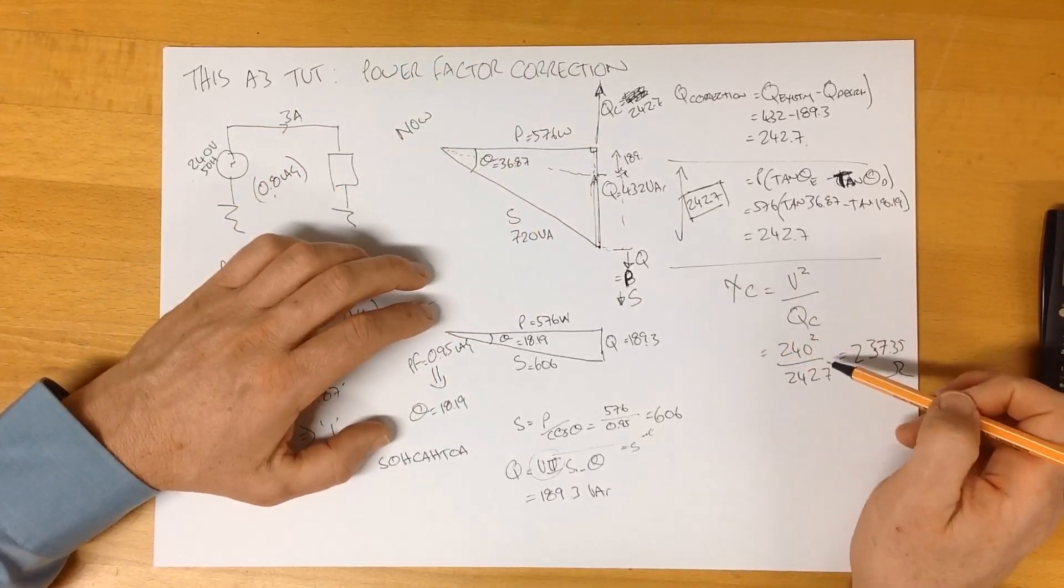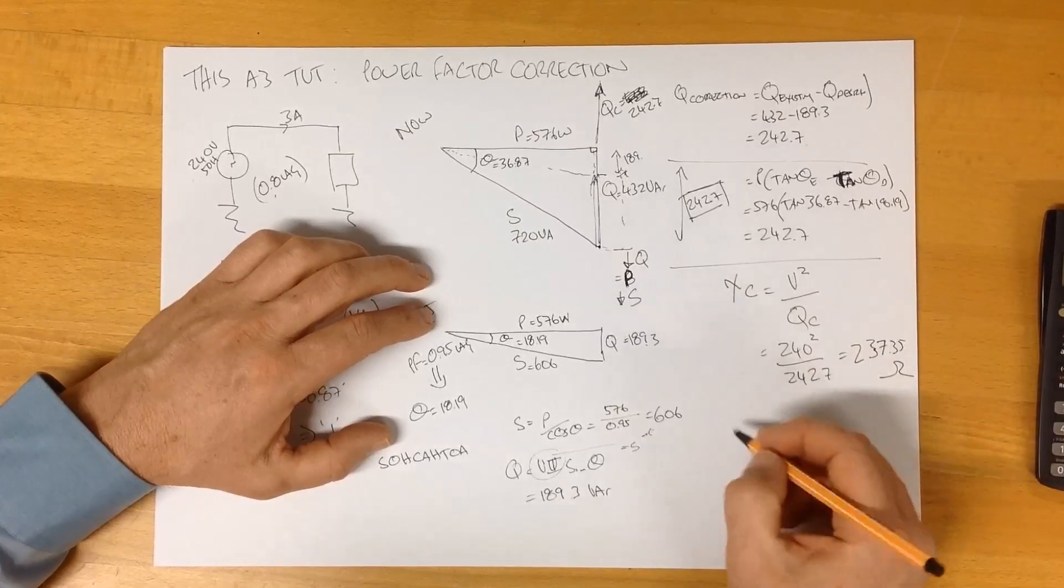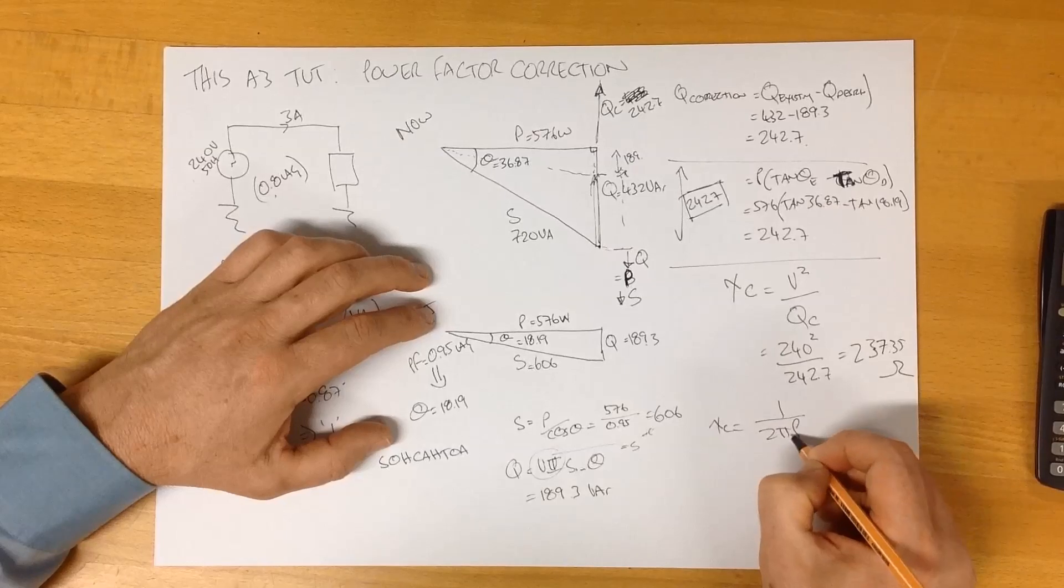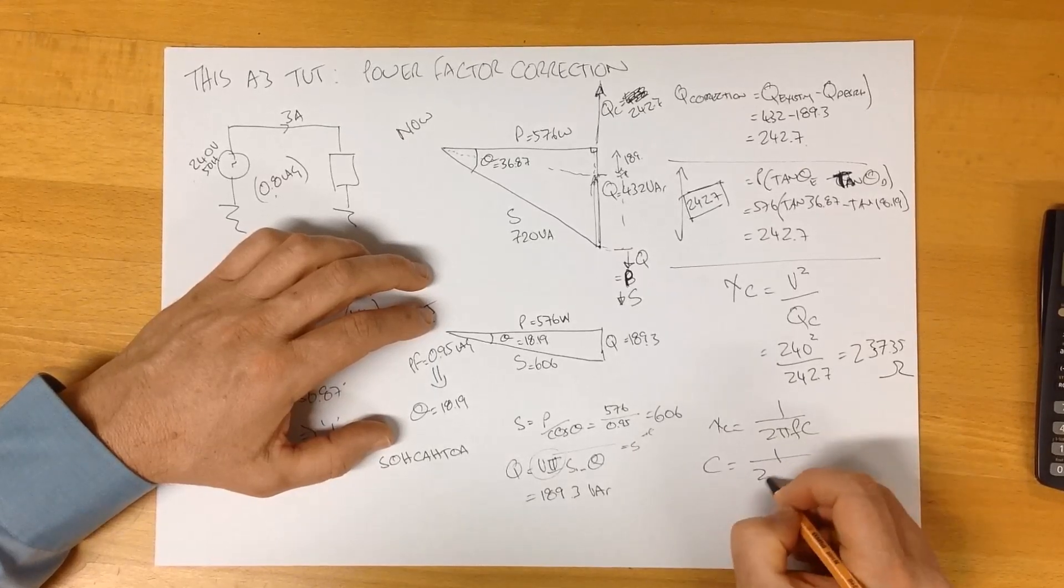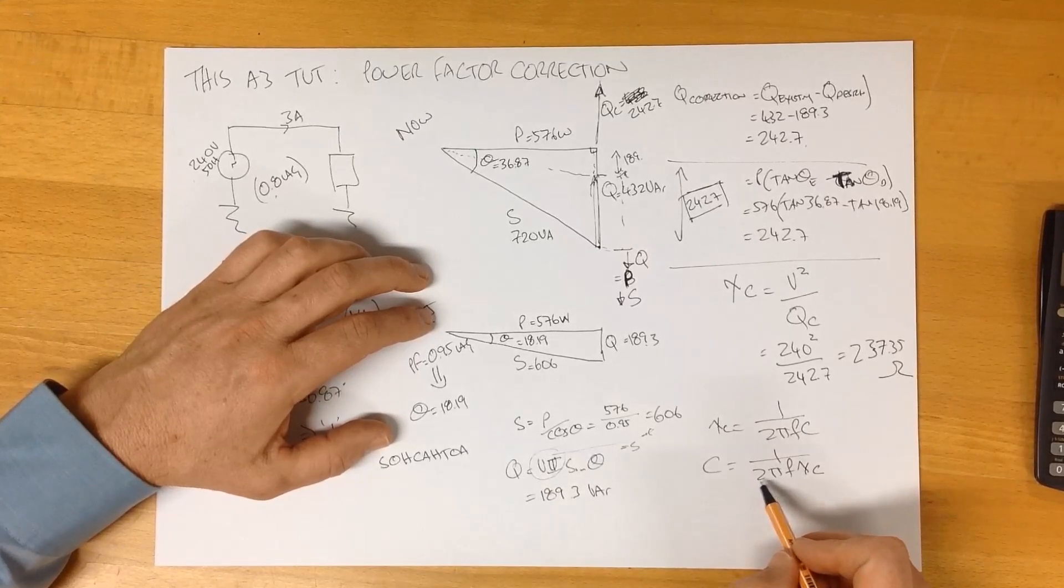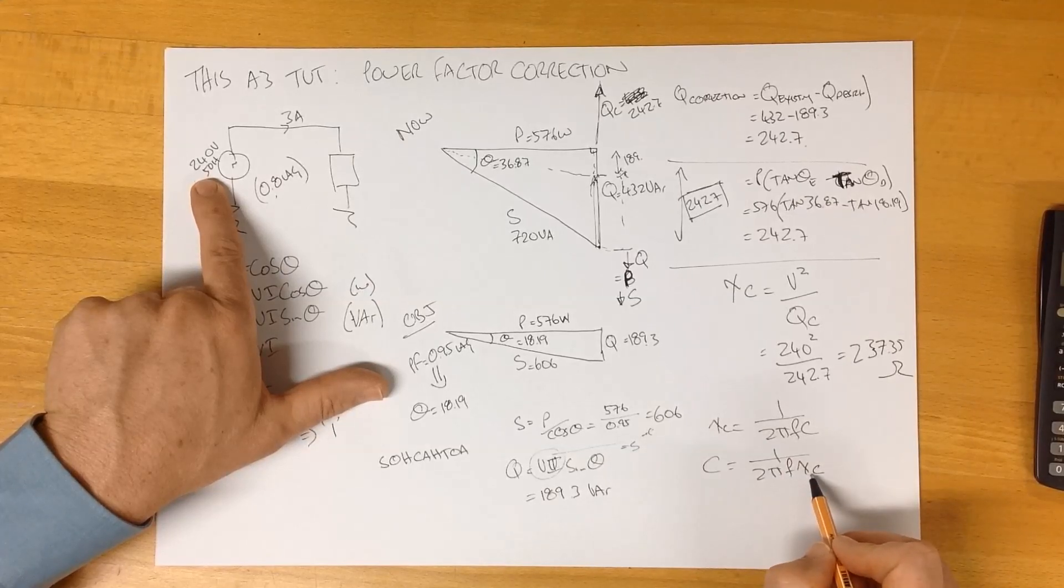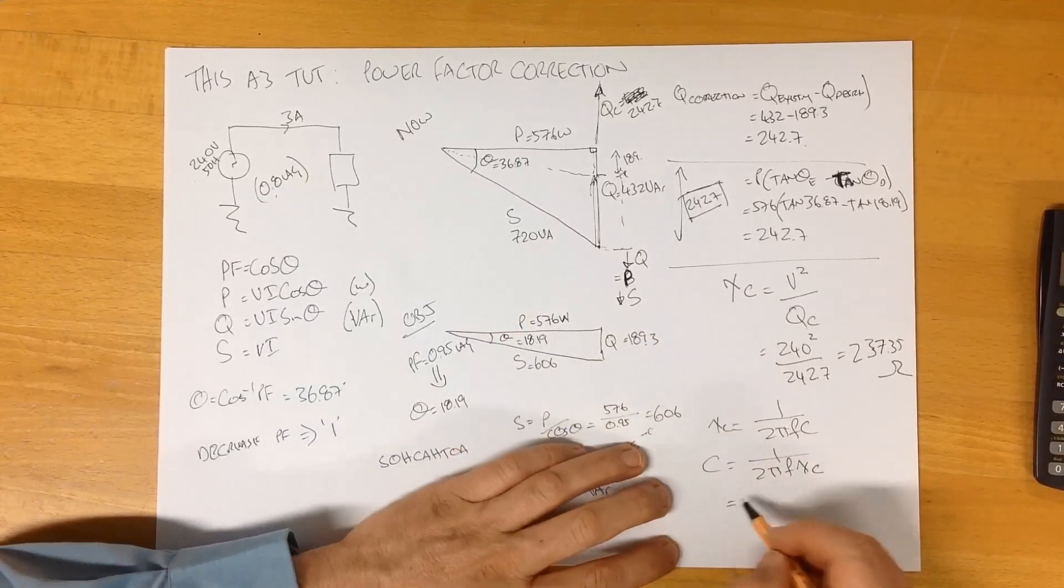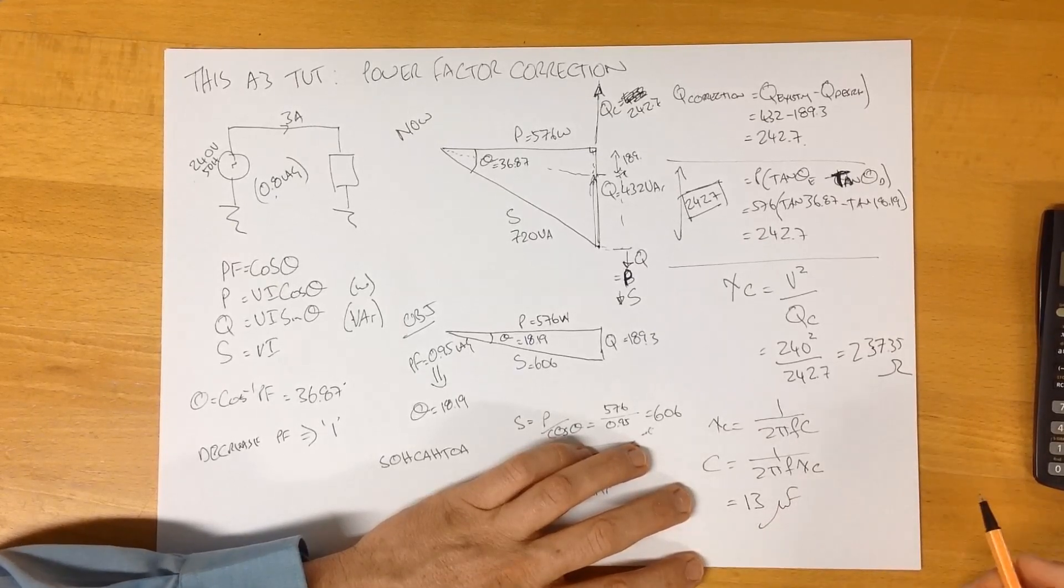From here, this is a good expression, but we still don't know how big our capacitor needs to be. This equation here is our equation for capacitive reactance. We can rearrange that. We know what the number 2 is. We know what pi is. We know what the frequency is. It's 50 hertz. And we know what our capacitive reactance is. We've just calculated it, 237 ohms. We can punch the numbers on that, and that comes out with an answer that's around about 13 microfarads.